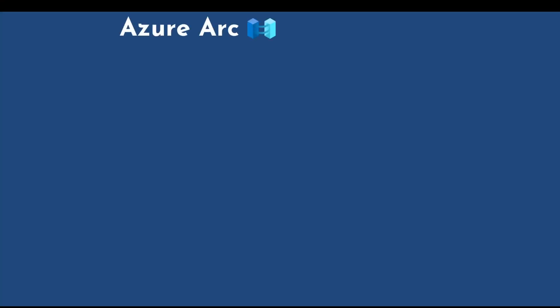Let's talk about Azure Arc. It is a service you use to manage multi-cloud and hybrid virtual machines, Kubernetes clusters, and databases as if they are running on Azure. It basically manages your on-premises servers and resources as Azure resources.